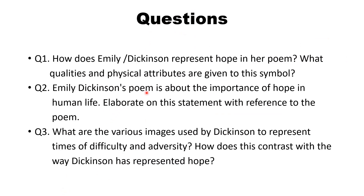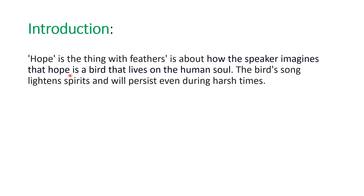Now we are going to answer these three questions. Though the questions look different, the answer I am going to discuss will be quite relevant to all three questions. You can make slight changes but the answer will be quite suitable. So: how does Emily Dickinson represent hope in her poem, and so on. The introduction: 'Hope is the Thing with Feathers' is about how the speaker imagines that hope is a bird that lives on the human soul. The bird song lightens spirits and will persist even during harsh times. Speaker here means the poet — how she imagines and how wonderfully she compares hope with a bird. The abstract thing is compared to a concrete thing.